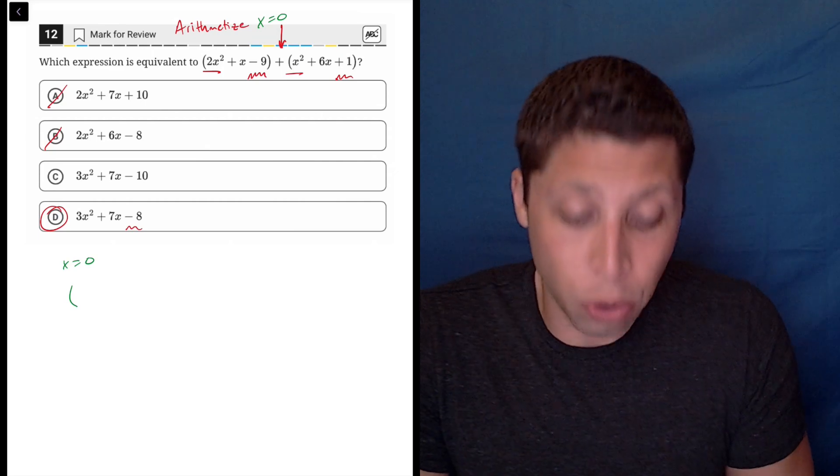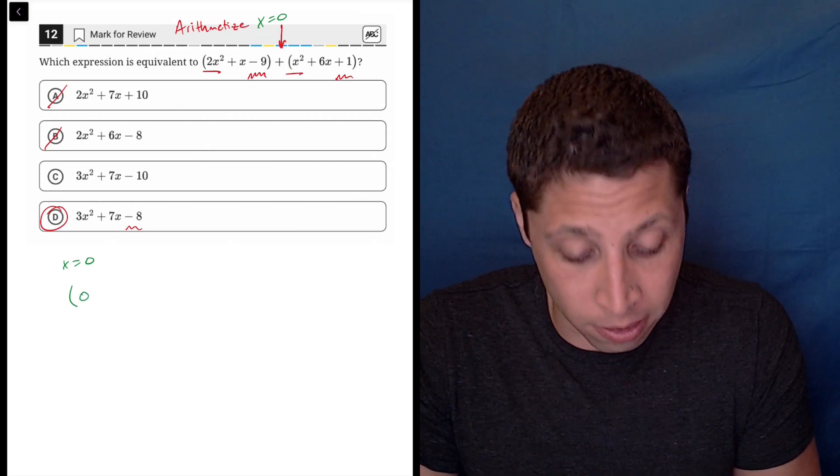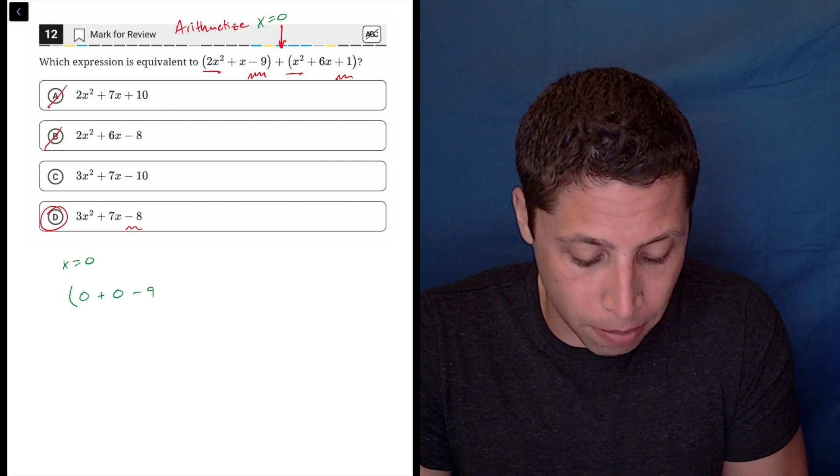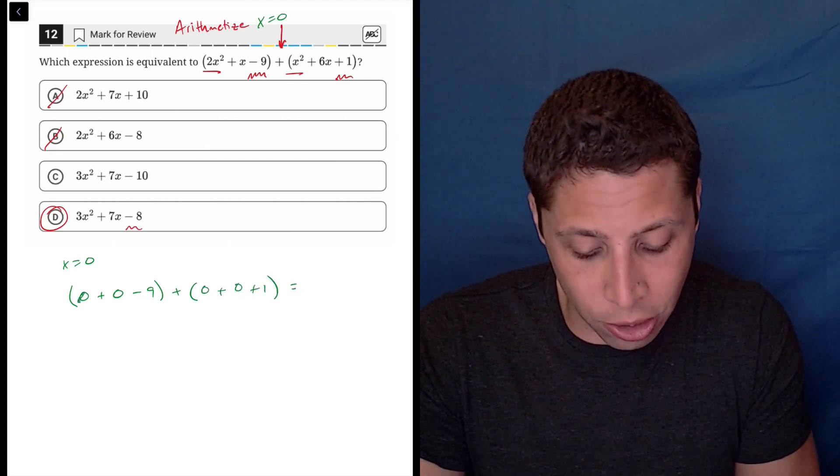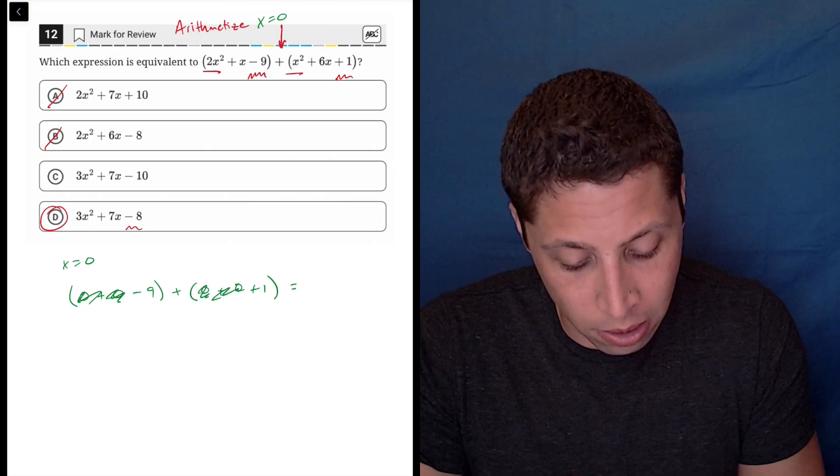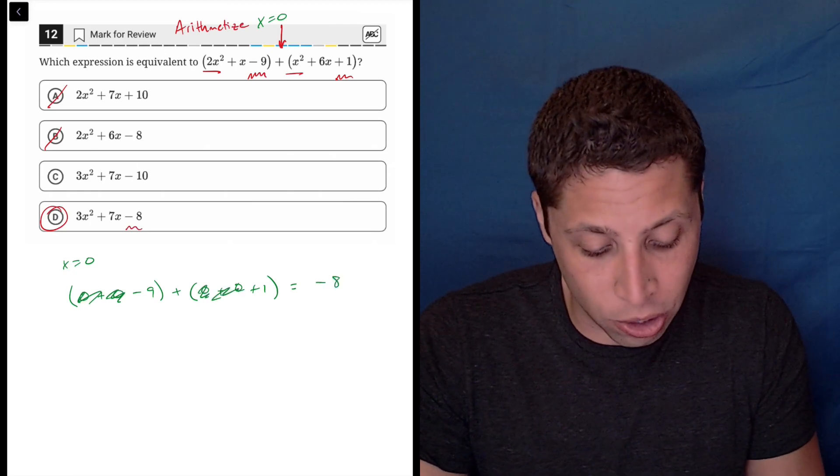we're going to end up with 2 times 0 squared is 0 plus 0 minus 9 plus 0 plus 0 plus 1. So that's really just, get rid of those zeros, negative 9 plus 1, which is negative 8.